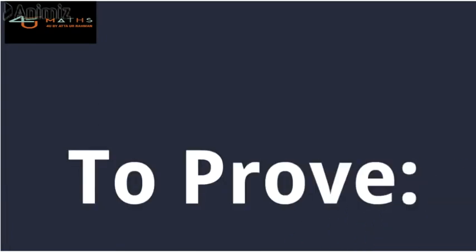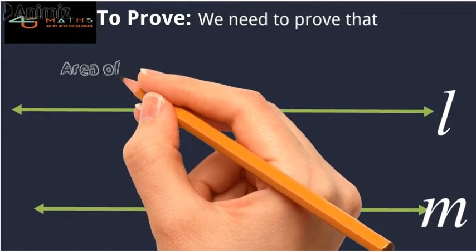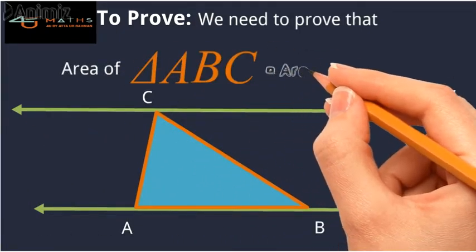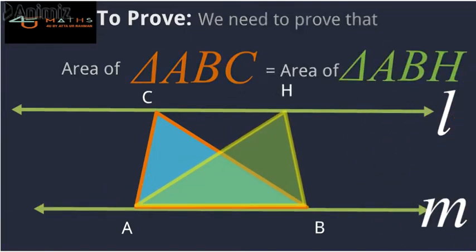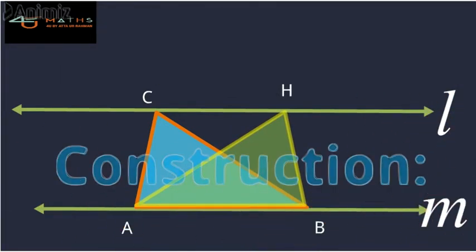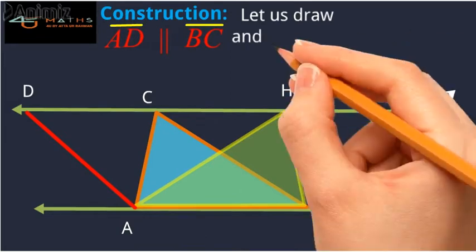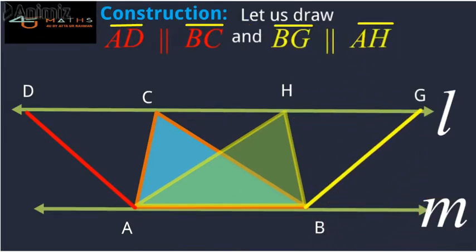To prove: We need to prove that the area of triangle ABC is equal to the area of triangle ABH. Construction: Let us draw AD parallel to BC and BG parallel to AH, to cut the line L at D and G respectively.